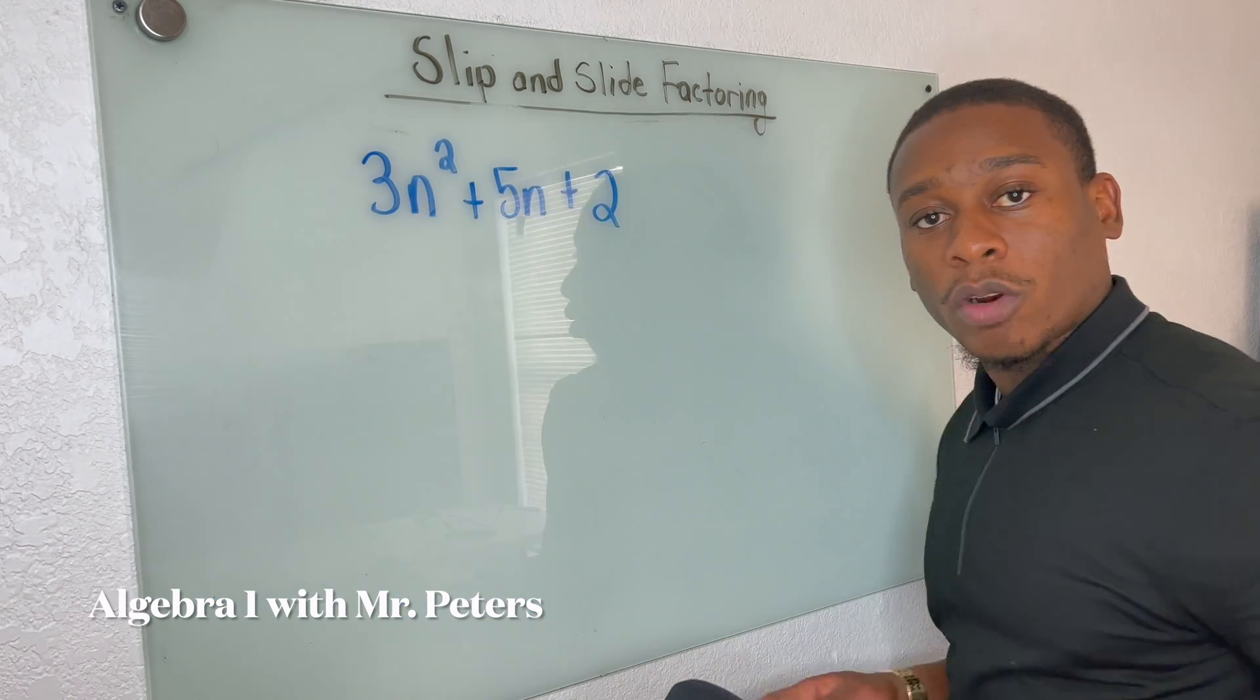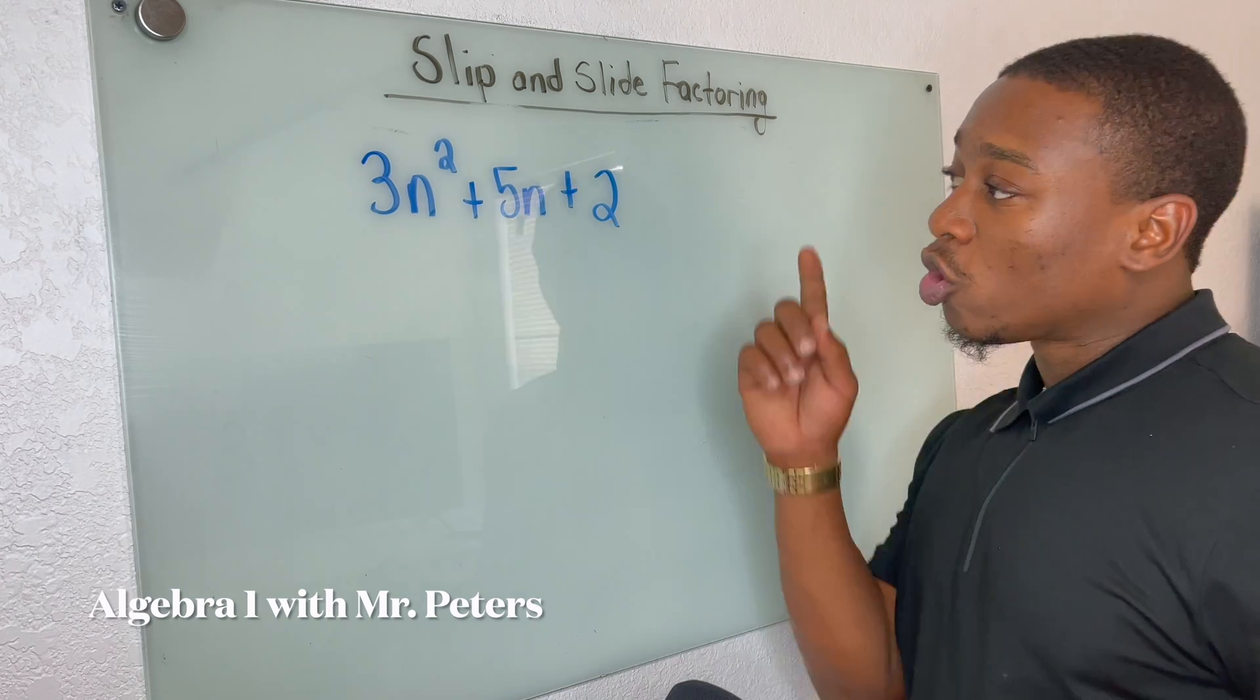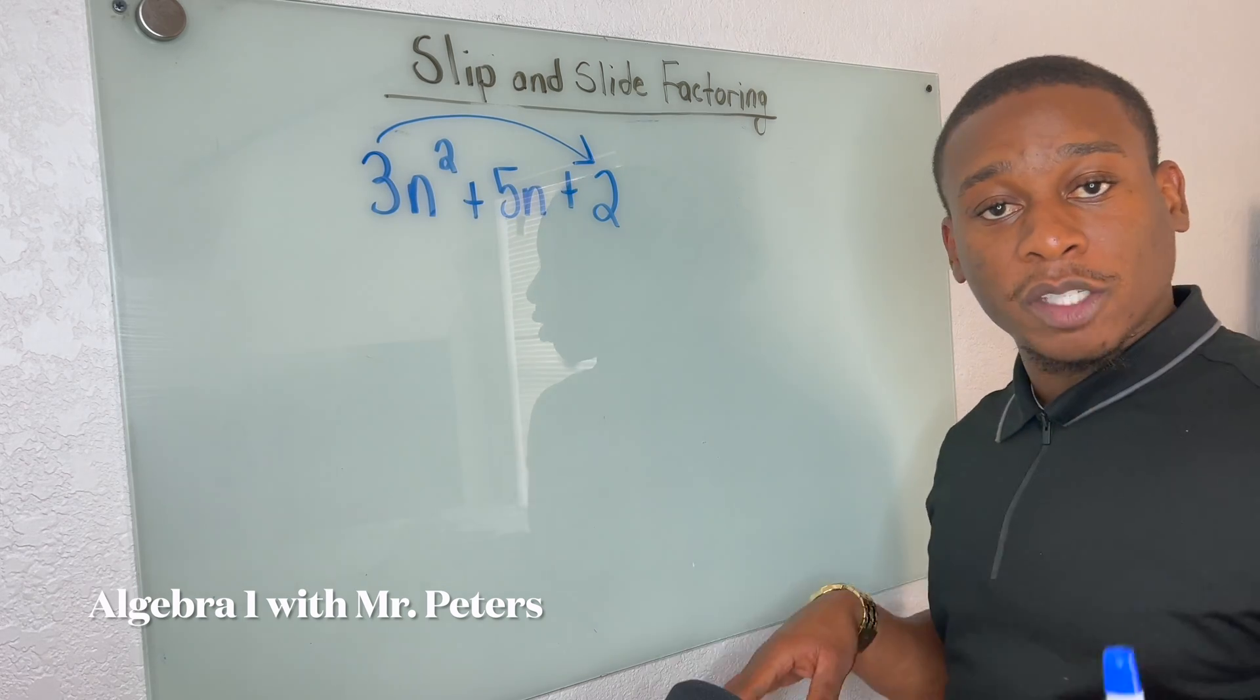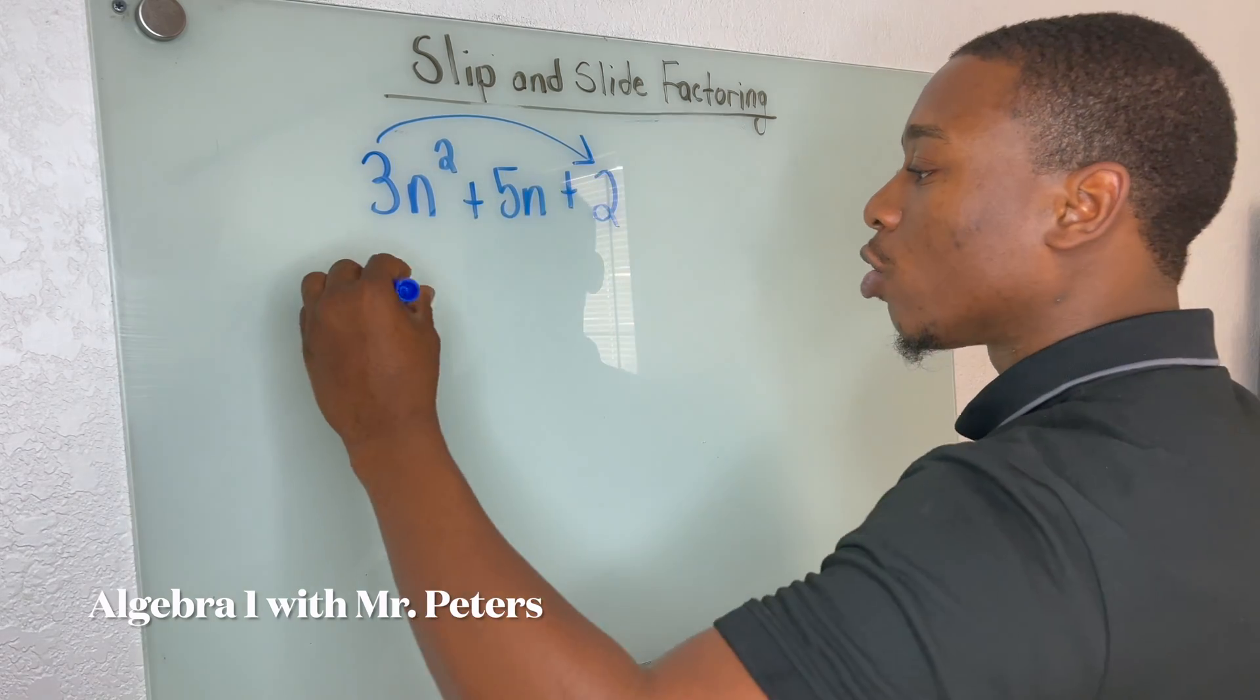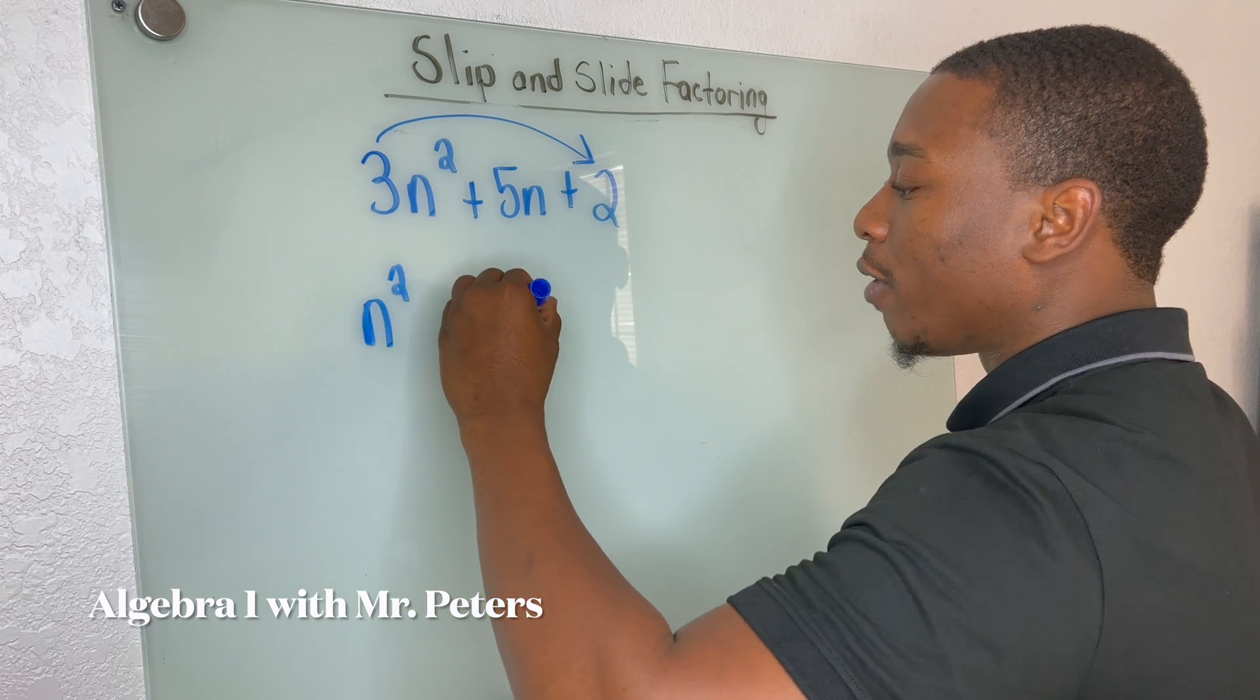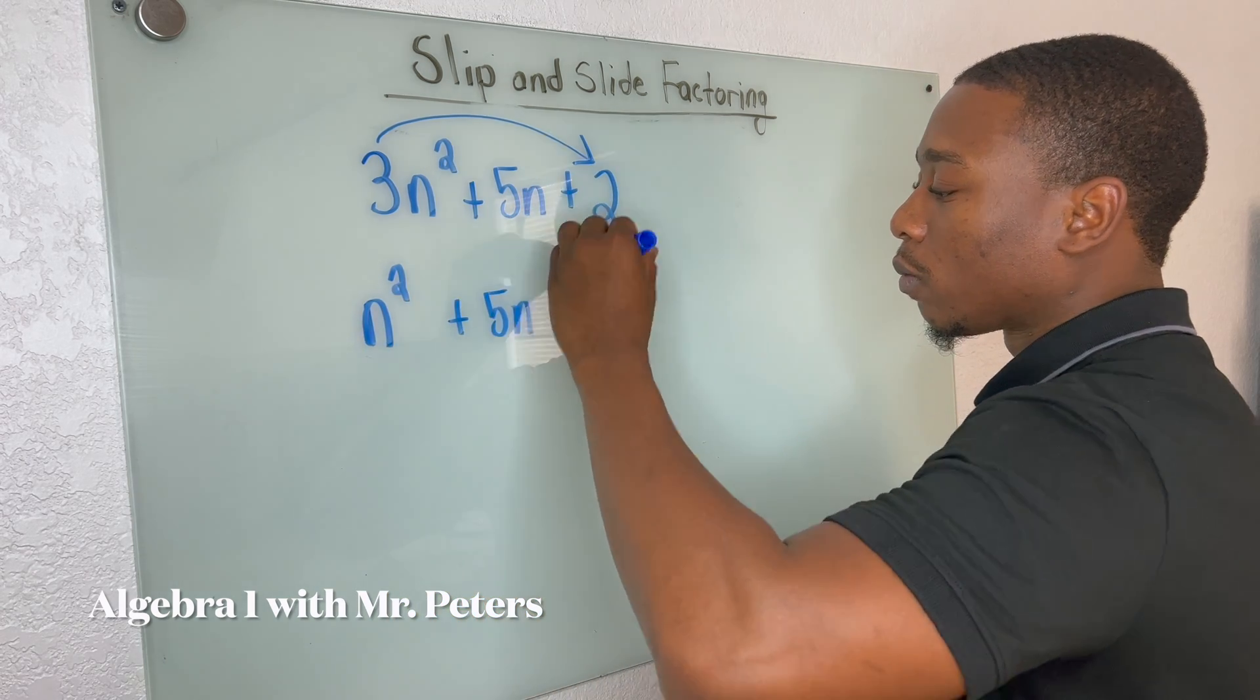You just have to make sure at the end that we simplify this binomial, okay? So in our last problem, same thing. So when we do slip and slide, A is greater than one. That has to be true for us to use it.